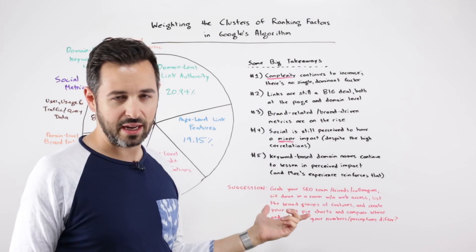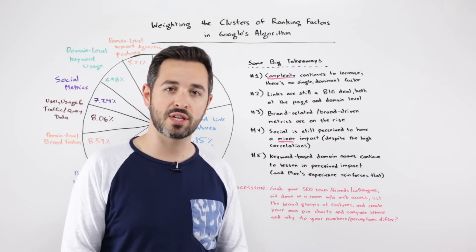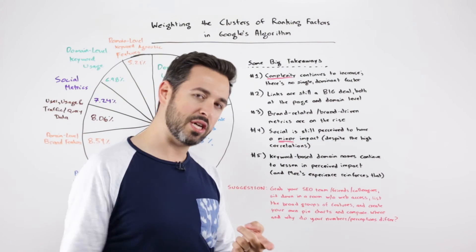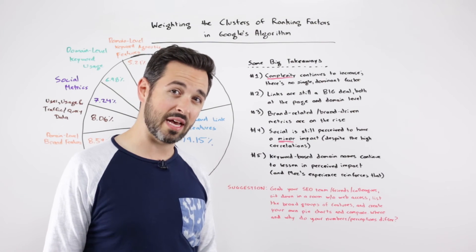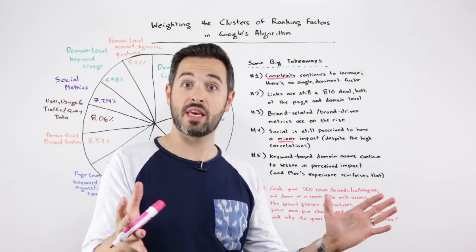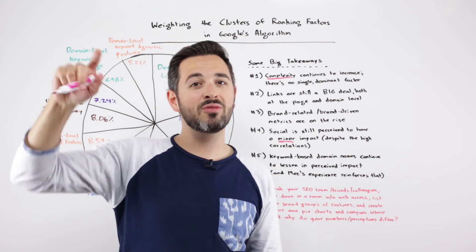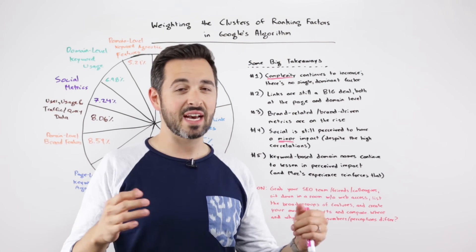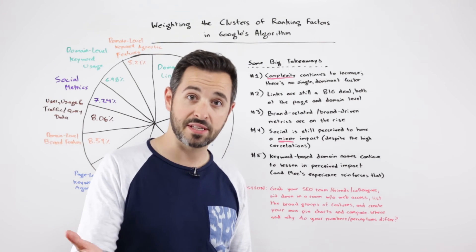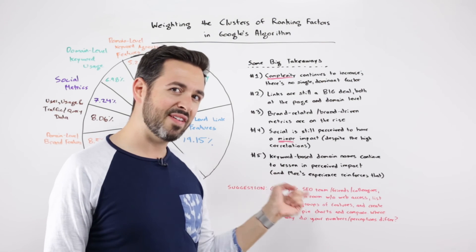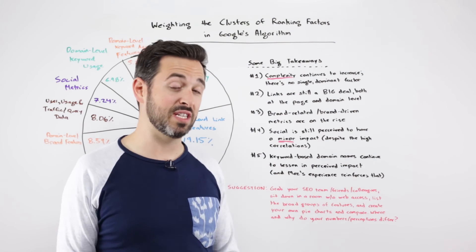Number five: keyword-based domain names, which have historically been a darling of the SEO and affiliate marketing worlds, continue to shrink. You can see that in the correlation data, the performance data, and the MozCast data set, which monitors what appears in Google. Our own experience reinforces that — Moz switched from the domain name SEOMoz, which had the keyword SEO right in there, to the Moz domain name not very long ago. We did see a rankings dip for a while, and now almost all of those numbers are right back up. That's both a successful domain shift and a story that having SEO in the domain name might not have been the source of as many rankings as we may have perceived.